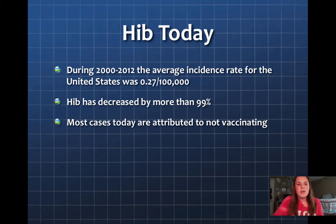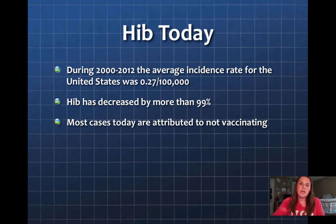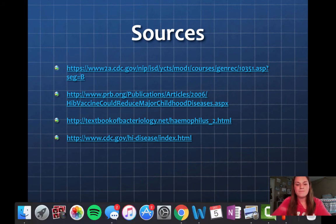HIV today: during 2000 to 2012, the average incidence rate for the United States was 0.27 out of 100,000, which is a very good number. HIV has decreased by more than 99%, making it a super effective vaccine. Most cases that occur today are attributed to not vaccinating. HIV is a very deadly disease, but it is something we can prevent through vaccination. And that is my presentation — thank you.